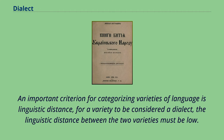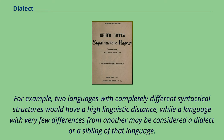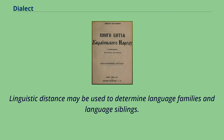An important criterion for categorizing varieties of language is linguistic distance. For a variety to be considered a dialect, the linguistic distance between the two varieties must be low. Linguistic distance between spoken or written forms of language increases as the differences between the forms are characterized. For example, two languages with completely different syntactical structures would have a high linguistic distance, while a language with very few differences from another may be considered a dialect or a sibling of that language.